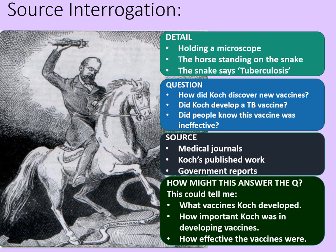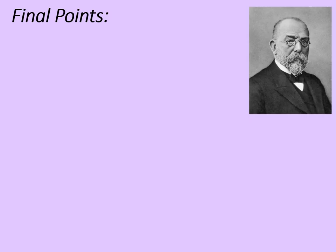Perhaps there was a need for a tuberculosis vaccine and it was being supported. Now, it's important that you don't need to know the answer to your question in order to ask it — and if you do know the answer, that doesn't matter either; it just needs to make logical sense. So how might this particular source answer the question? Well, it might tell you what vaccines Koch developed, how important Koch was in developing vaccines, and how effective the vaccines were. You could take any four of these matching bullet points and turn that into a convincing four-mark answer.